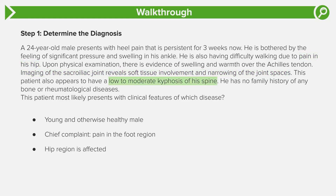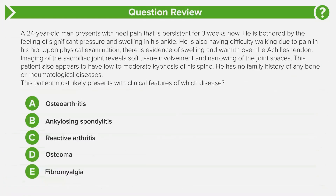In addition to having both hip and ankle involvement, they give us imaging findings showing soft tissue involvement and narrowing of joint spaces. A normal 24-year-old guy should not have swelling or narrowing, especially of joint spaces. On exam, they mentioned that he actually has low to moderate kyphosis of his spine — again, a young healthy guy should not have that. Taking into account that he's a healthy young guy with joint pain, spine and hip involvement, and narrowing of joints, answer choice B is the most likely answer: Ankylosing Spondylitis.